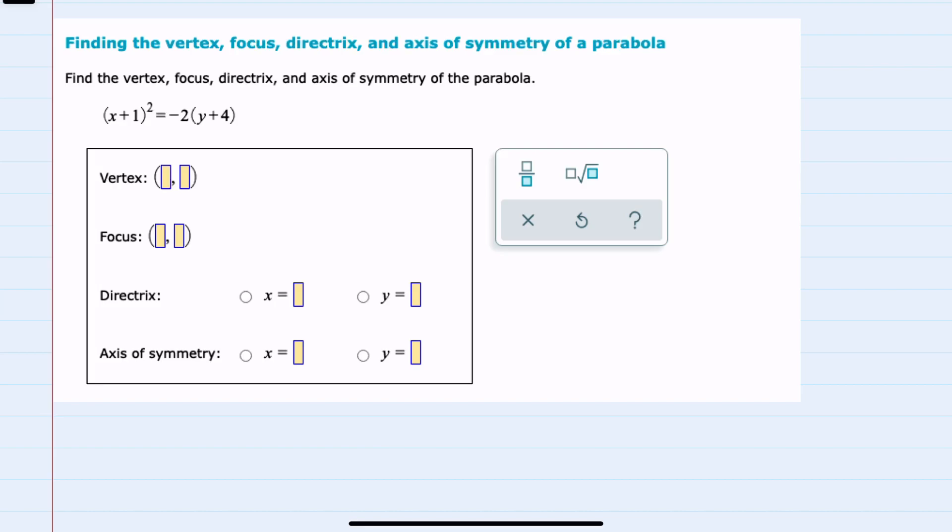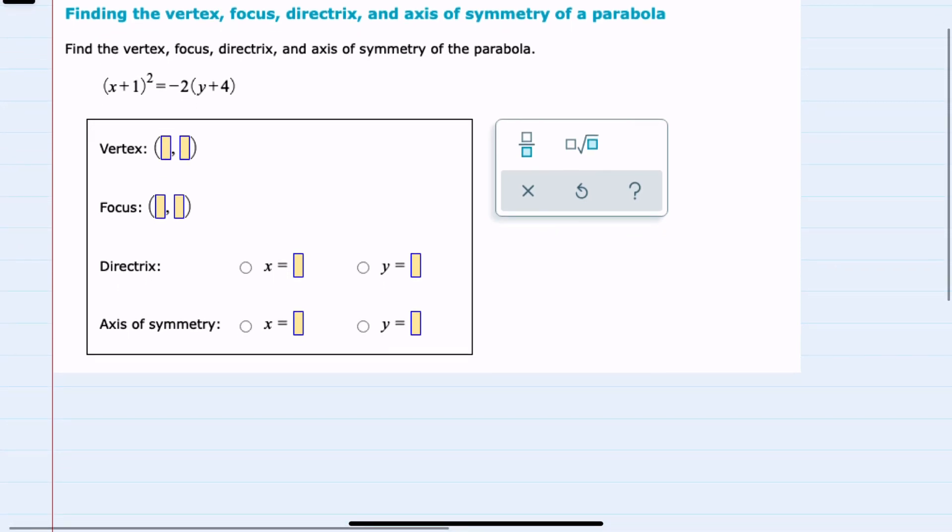In this video, I'll be helping you with the Alex problem type called finding the vertex, focus, directrix, and axis of symmetry of a parabola. We're given here the equation of our parabola, x plus 1 squared equals negative 2 times y plus 4.